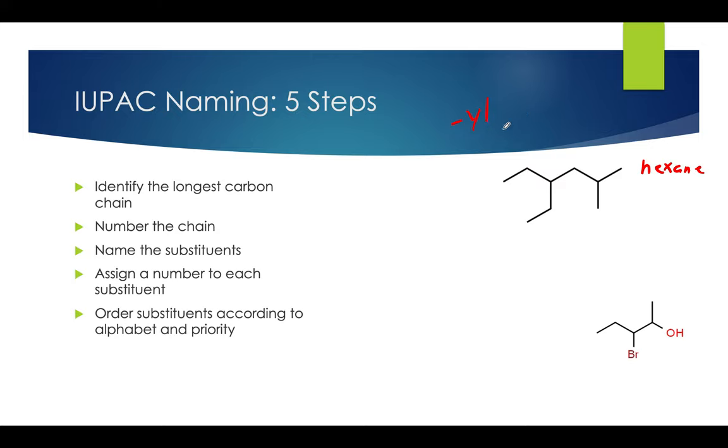The exceptions to these are the first four numbers — 1, 2, 3, 4. These will be called methyl, ethyl, propyl, and butyl chains.